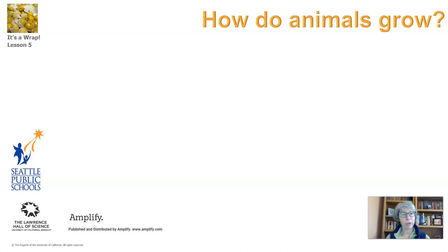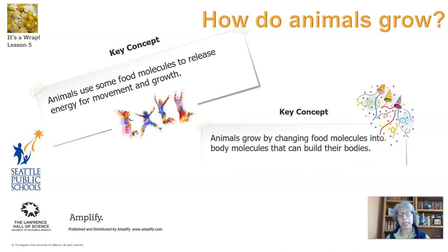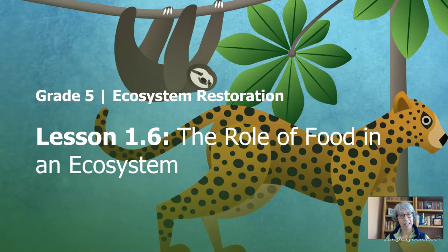Let's take a look and review from lesson five. We learned that animals use some food molecules to release energy for movement and growth. And we learned that animals grow by changing food molecules into body molecules that can build their bodies. So in this lesson, lesson six, we're going to look at the role of food in an ecosystem. The purpose of this lesson is to build on what we have been learning and apply it to thinking about matter as it flows in an ecosystem.